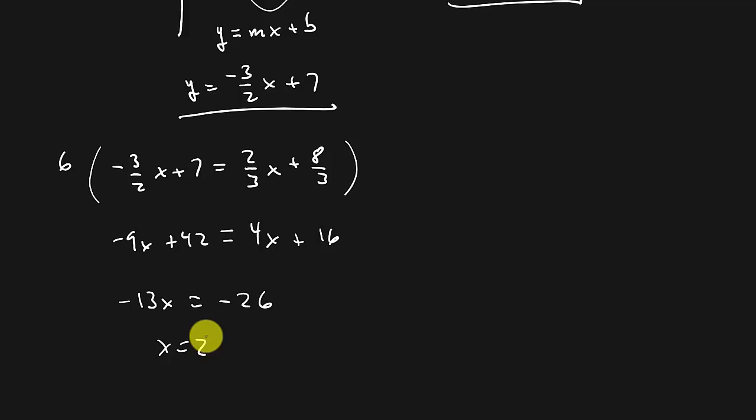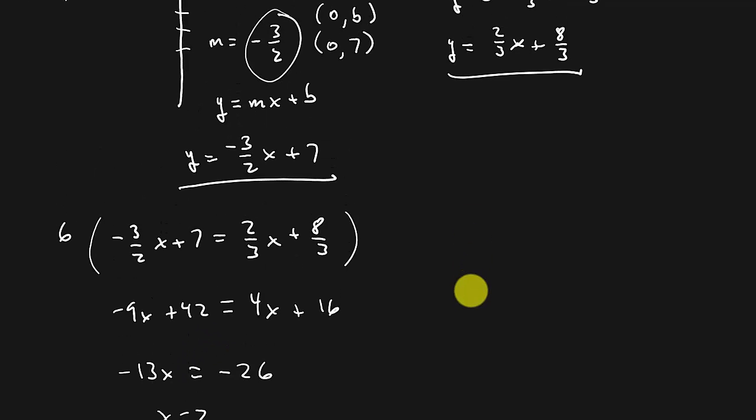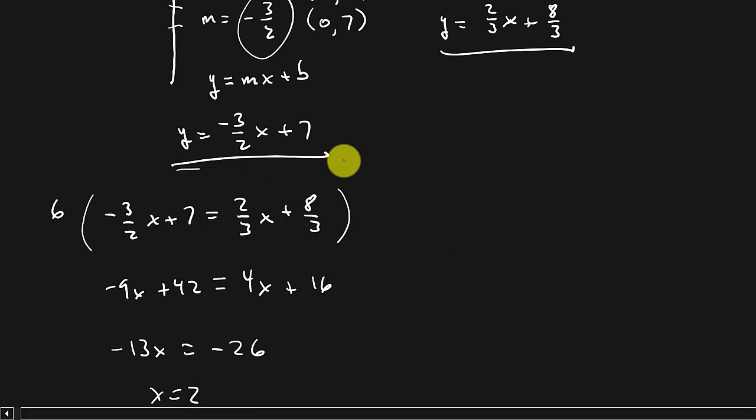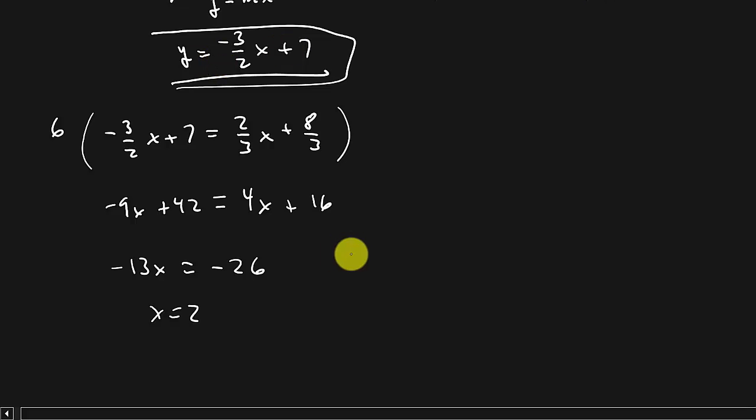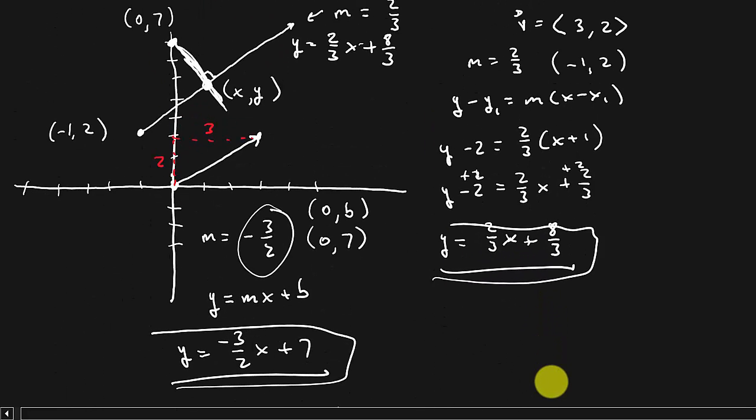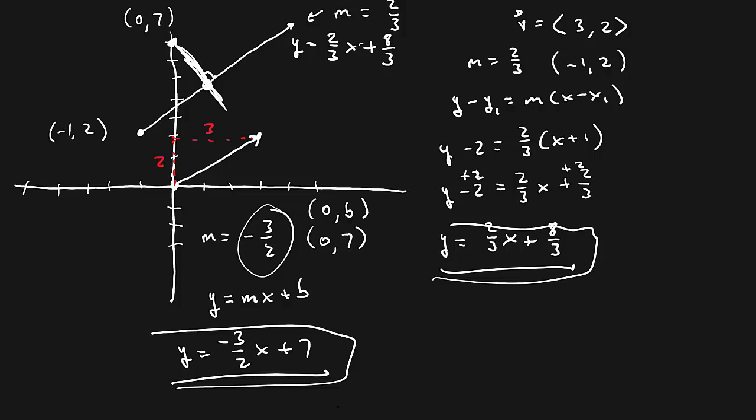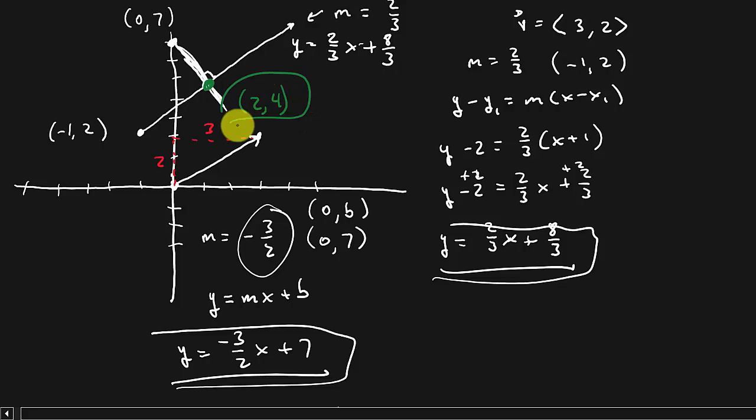And then to find y, we can take x = 2 and we can plug it into this one or that one. We'll plug it into this one here. So we get y = (-3/2)(2) + 7. And so y = -3 + 7, which equals 4. And so the point that he turns is the point (2, 4). That would be this point. So our answer is the point (2, 4). There's your answer.